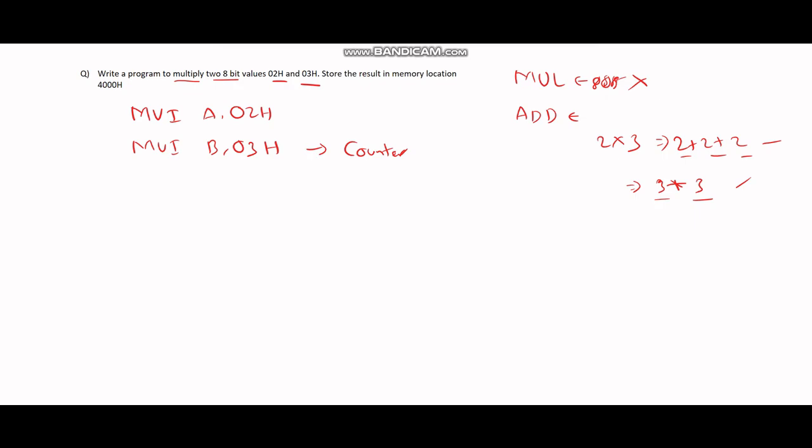Now, for storing the multiplication result, we'll use the accumulator. So we'll move this particular value that we're supposed to add into some other register using move. Let's move it to C.